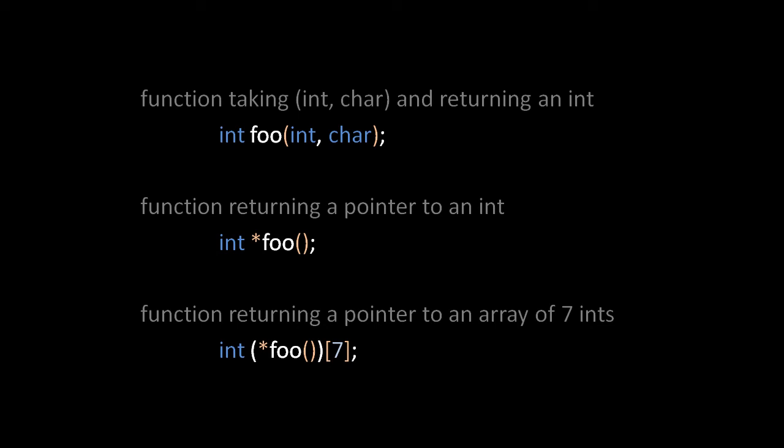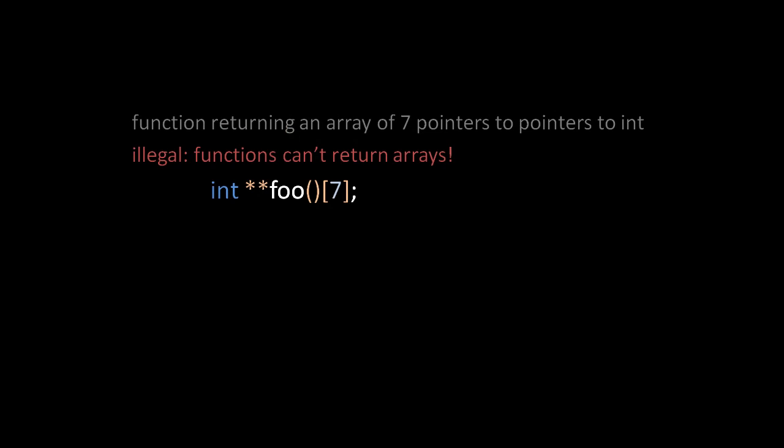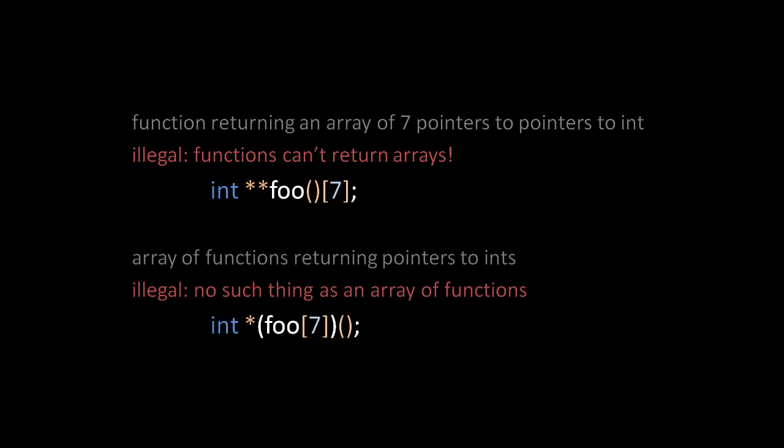Be clear that these three examples are declarations but not definitions. It's also important to understand that not all possible combinations of these modifiers are valid. Reading the modifiers inside out, one example declares a function foo that takes no arguments and returns an array of 7 pointers to pointers to int, but this declaration is invalid because arrays are not values like ints or pointers, and so a function may not return an array. Another example declares an array of functions taking no arguments and returning pointers to ints, but this declaration is also invalid because there's no such thing as an array of functions.